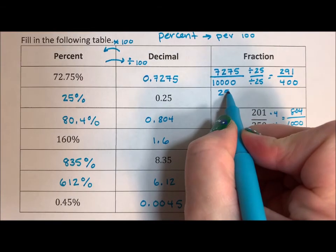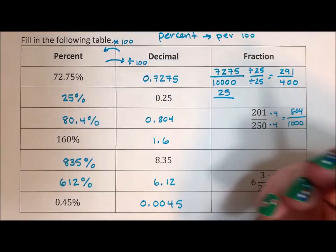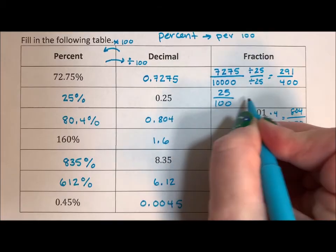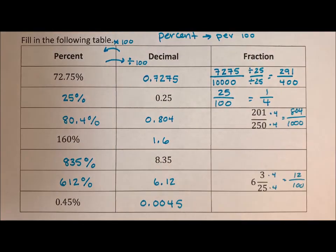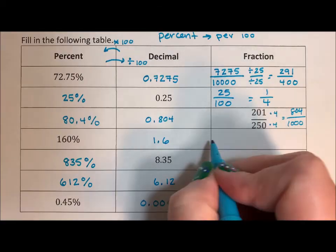25 has two decimal places, so over 100. And I hope everyone knows that this is 1/4, because 25 is a quarter.